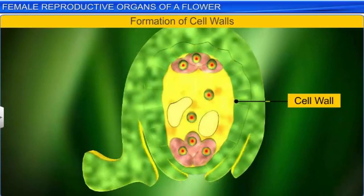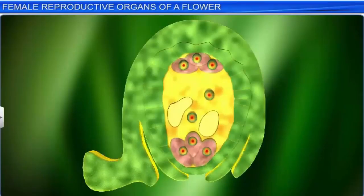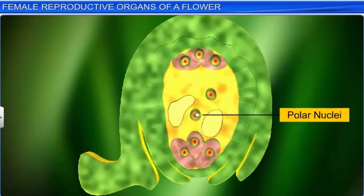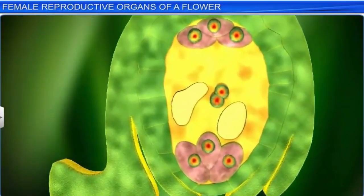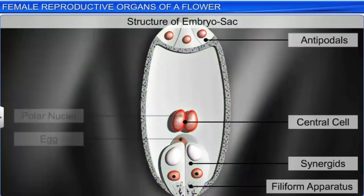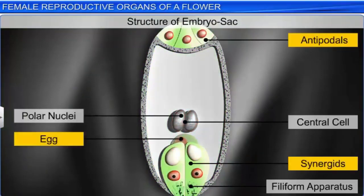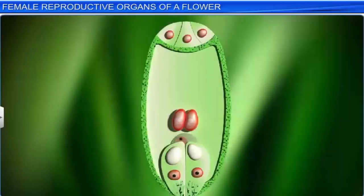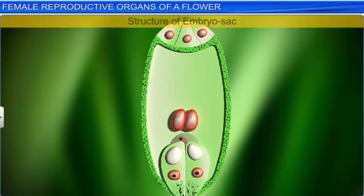Due to this, six of the eight nuclei organize into cells, while the two remaining nuclei — called polar nuclei — migrate to the center of the embryo sac. Thus, we find the embryo sac to be in a seven-celled and eight-nucleate stage, with six cells at the poles and a large central cell with two nuclei in the center. Meanwhile, the six cells organize to form the typical structure of the embryo sac, which is now ready for fertilization.